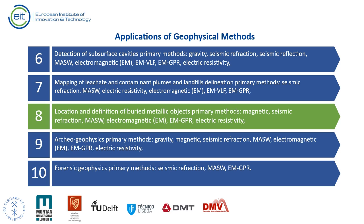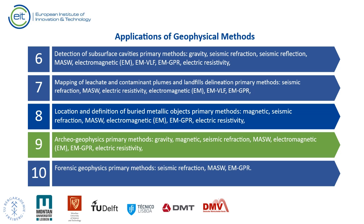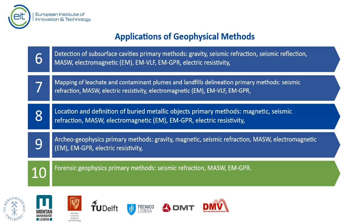For archaeogeophysics, primary methods include gravity, magnetic, seismic refraction, MASW, electromagnetic, magnetic, GPR, and electric resistivity. For forensic geophysics, primary methods include seismic refraction, MASW, magnetic, and GPR.